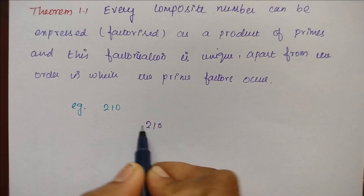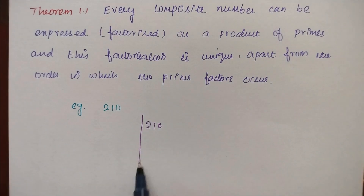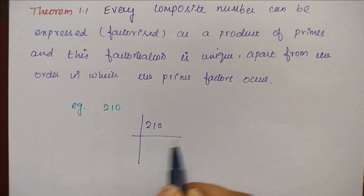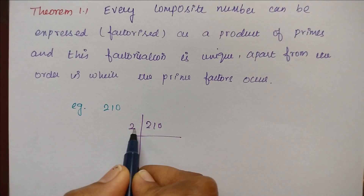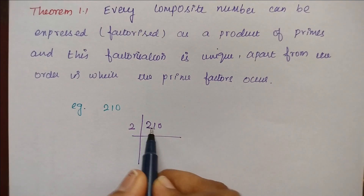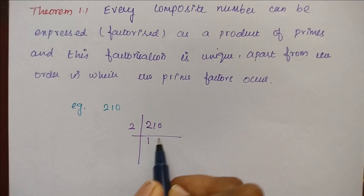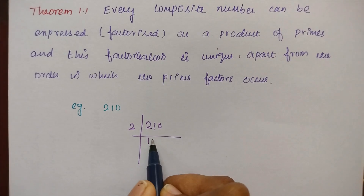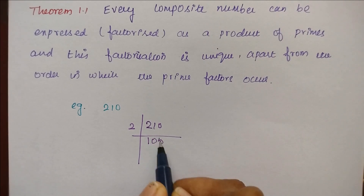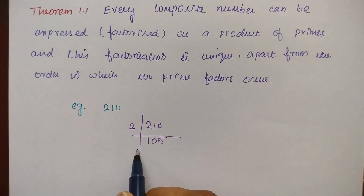The number is 210. Start with the smallest prime number 2 — 210 is divisible by 2. So 2 goes: 2 times 1 is 2, bring down 1, 2 times 5 is 10 — giving us 105.